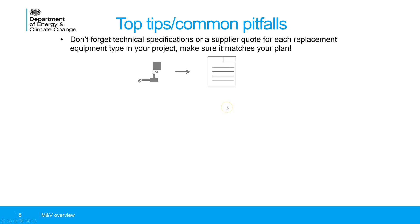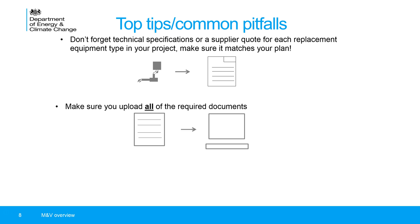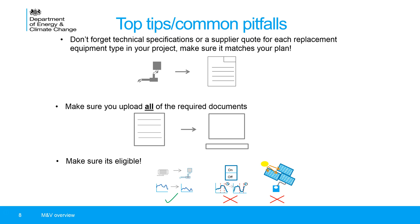A few top tips: don't forget the technical specifications or supplier quotes for each replacement equipment type, and make sure the information in your technical specification matches your plan. Make sure you upload all of the required documents — it's easy to overlook some, so use the checklists available in the videos and in the manual. Also make sure your technology is eligible — savings must be achieved through improved efficiency, not through something like on-site generation.